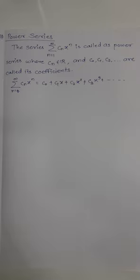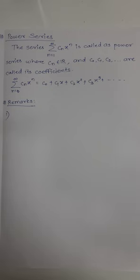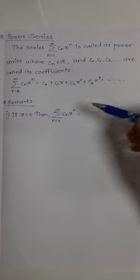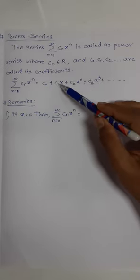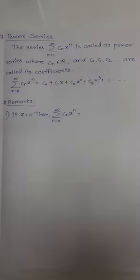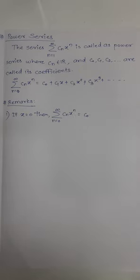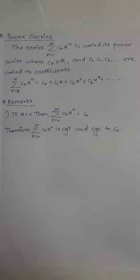Now let us discuss some important remarks. The first remark: let x equal zero. If you put x equal to zero in the series, zero into anything is zero, so only c₀ remains. That means the series is convergent. Therefore, the summation cₙxⁿ is convergent and converges to c₀.